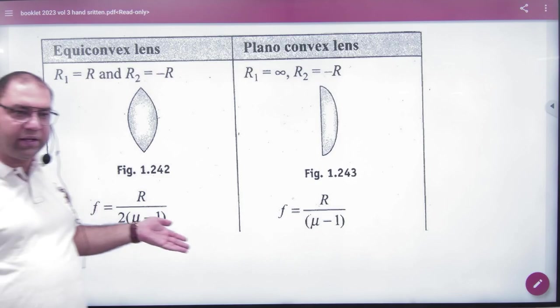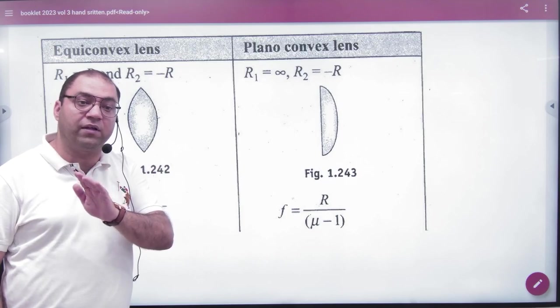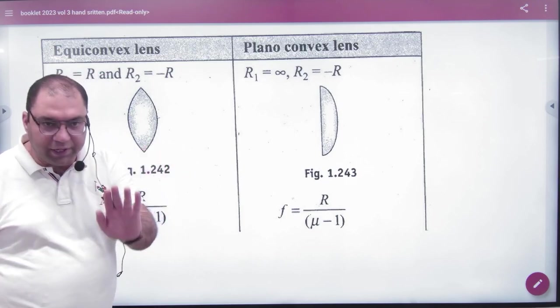We already know how to do the lens maker. How to do it in double convex? How to do it in plain convex? We have already done sign conventions last time. So there is no need for shortcuts.